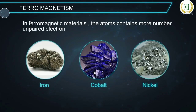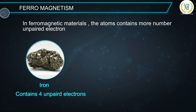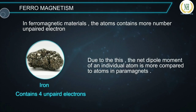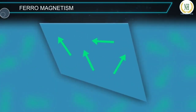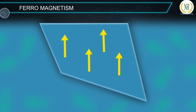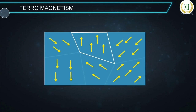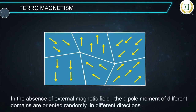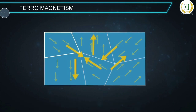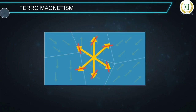In ferromagnetic materials, the atoms contain a larger number of unpaired electrons — for example, iron contains 4 unpaired electrons — so the net dipole moment of each atom is greater than in paramagnets. The dipole moment of one atom strongly interacts with neighboring atoms and aligns in a common direction, forming a small group called a domain. A ferromagnetic material is made up of a very large number of such domains. In the absence of an external magnetic field, the dipole moments of different domains are randomly oriented, so the net magnetic moment of the entire material is zero.